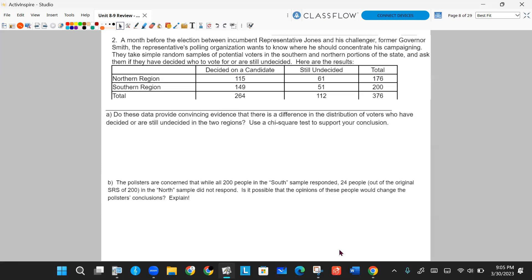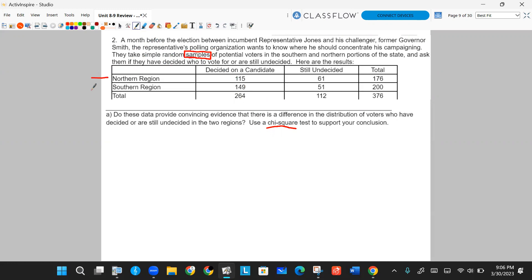Well, let's tackle the first part first. Do these data provide convincing evidence that there is a difference in the distribution of voters who have decided or are still undecided? Use a chi-square test to support your conclusion. So this question is nice in that it does ask you to use a chi-square test, so we don't have to guess. But which one is it? Well, look at the number of samples. They take simple random samples, multiple samples. So since that's two samples, we're talking about northern region and southern region, we have to do a difference of the distribution. And that test is called the chi-square test of homogeneity.